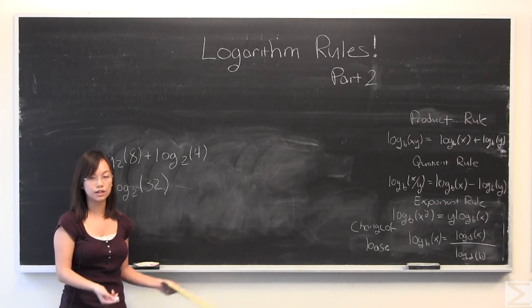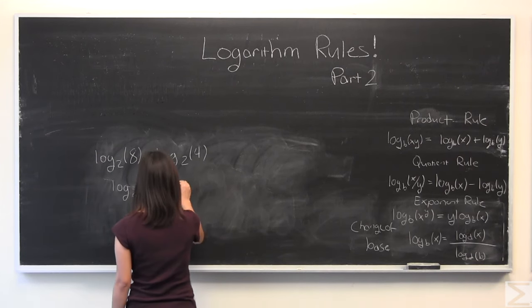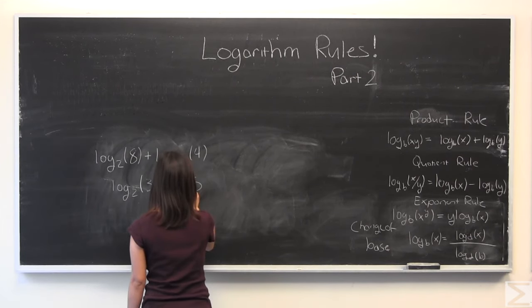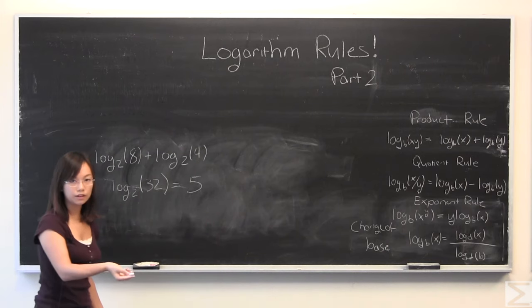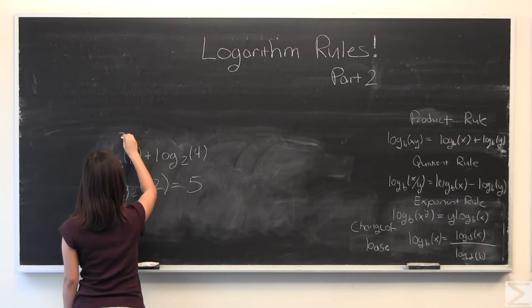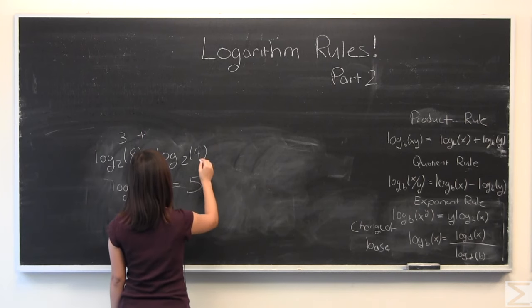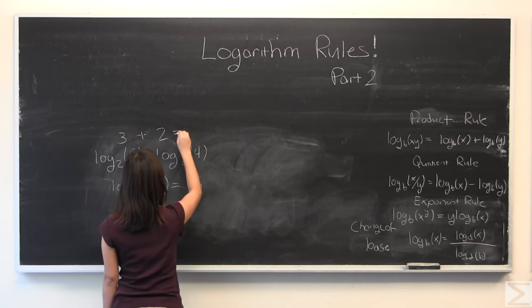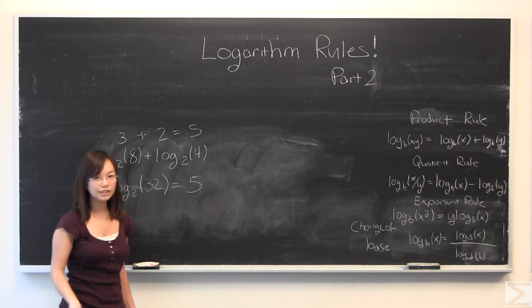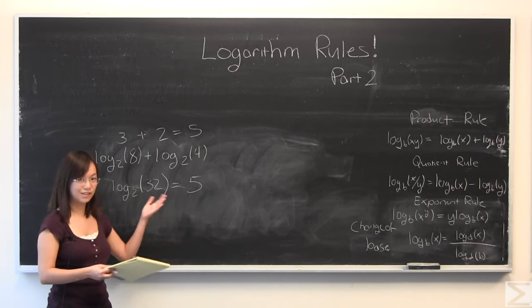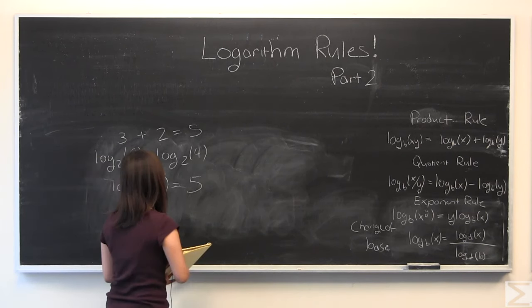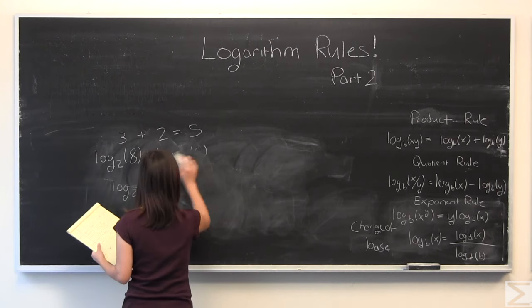And that's what the product rule says we can do. So 2 to the power of what is 32? 2 to the power of 5 is 32. We can confirm this by saying 2 to the power of 3 is 8. 2 to the power of 2 is 4. This is also equal to 5. They're equivalent. So if you're willing to accept that, then you can definitely use the product rule in your examples and math. So that's good.